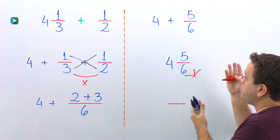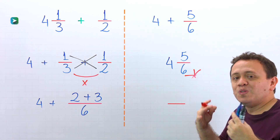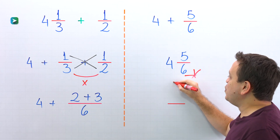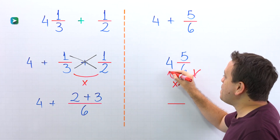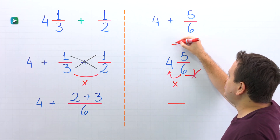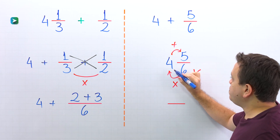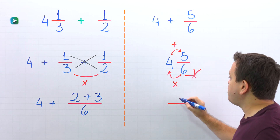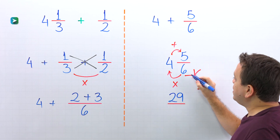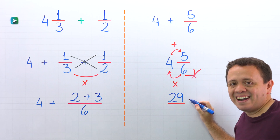However, we can also rewrite this mixed number as an improper fraction. Do you remember how to convert a mixed number to an improper fraction? First, we multiply the denominator by the whole number, and then we add this result to the numerator. Here we go — 6 times 4 is 24, plus 5 gives us 29. The denominator stays the same.